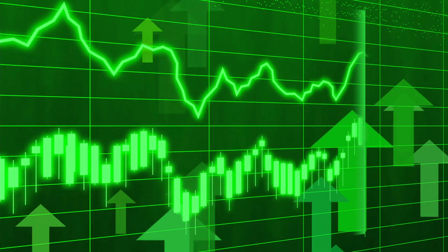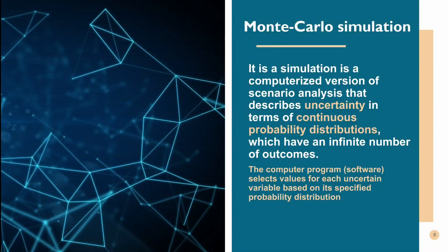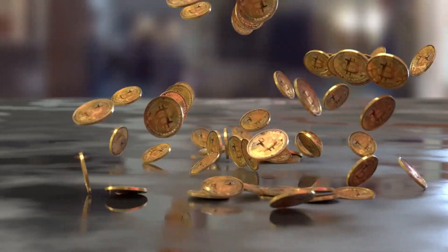Focusing on Monte Carlo simulation as an example: this simulation is a computerized version of scenario analysis that describes uncertainty in terms of continuous probability distributions, which have an infinite number of outcomes. The software selects values for each uncertain variable based on its specified probability distribution.